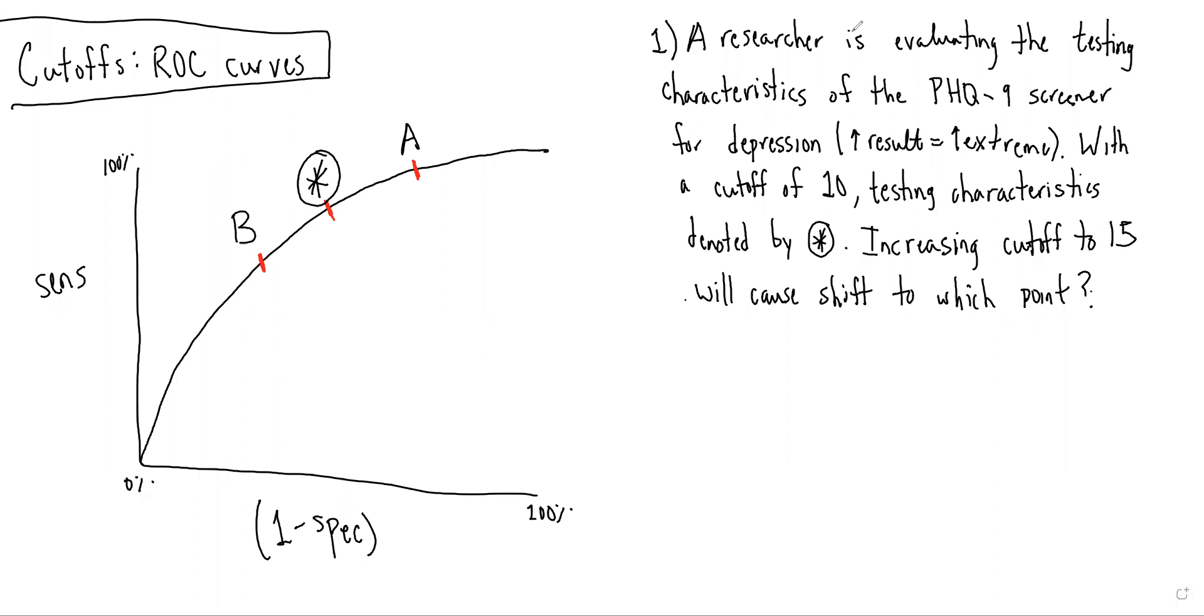So in this case, a researcher is evaluating the testing characteristics of the PHQ-9 screener for depression, where an increased result is more extreme. With a cutoff of 10, the testing characteristics are denoted by the star. If we were to increase the cutoff to 15, in which direction would we shift in terms of the point? Would we shift towards A or would we shift towards B?